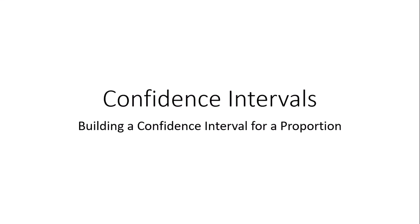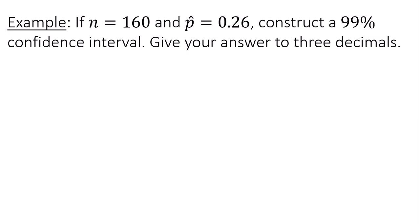Welcome. We're now going to use technology to build a confidence interval for a population proportion. If my sample size n is 160, my sample proportion p hat is 0.26, construct a 99% confidence interval. Give your answer to three decimals.